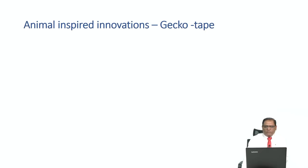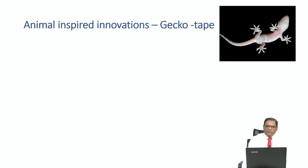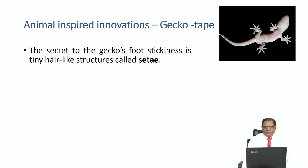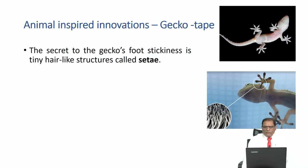The next example is gecko tape. You have likely seen geckos running around and attaching themselves to very slippery surfaces like glass. The secret lies in the lower surface of their feet and fingers. The gecko's foot is a very sticky surface due to tiny hair-like structures called setae — small nanoscale structures that give a firm grip on extremely slippery surfaces.